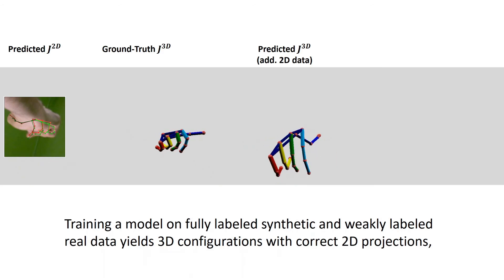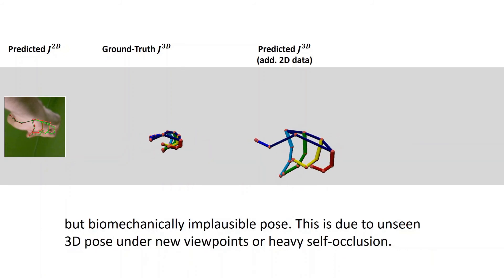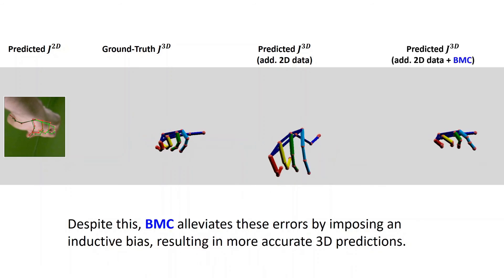Training a model on fully labeled synthetic and weakly labeled real data yields 3D configurations with correct 2D projections, but biomechanically implausible pose. This is due to unseen 3D poses under new viewpoints or heavy self occlusion. Despite this, BMC alleviates these errors by imposing an inductive bias resulting in more accurate 3D predictions.